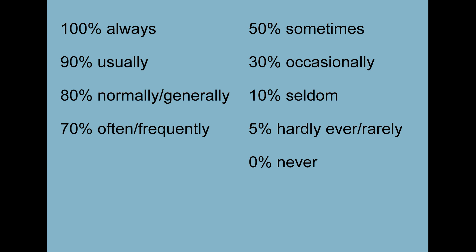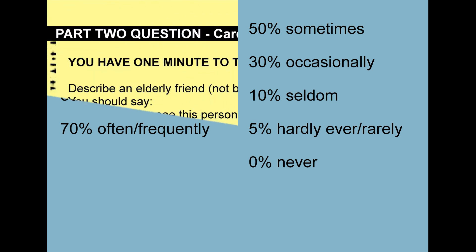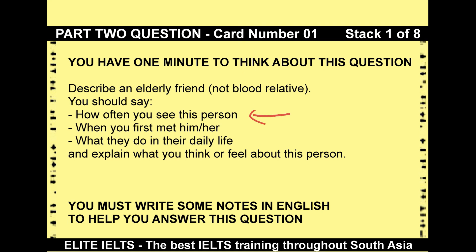There are many internet sites that give some type of quota for how people may interpret frequency words: always (100%), usually (90%), normally or generally (80%), often or frequently (70%), sometimes (50%), occasionally (30%), seldom (10%), hardly ever or rarely (5%), and never (0%). For this question, let's use 'usually.'